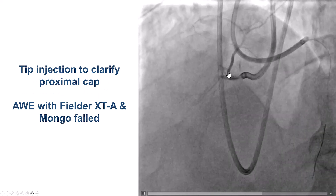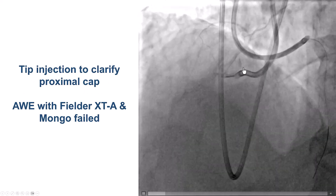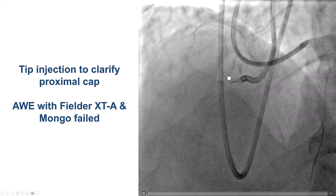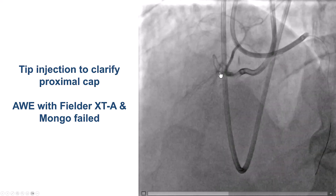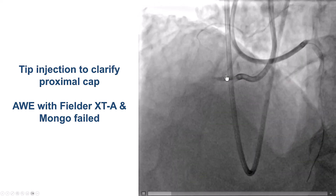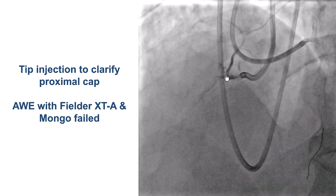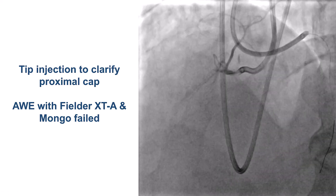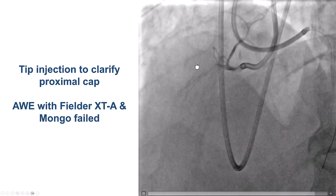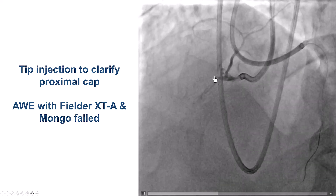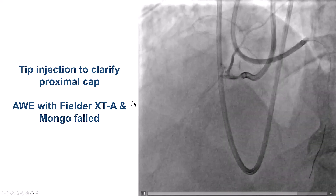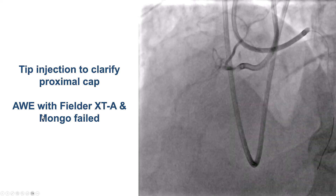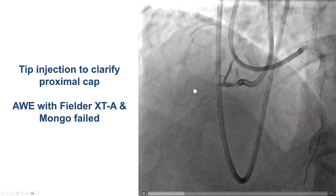We had difficulty understanding the proximal cap, in part because there was dampening of the guide. In cases like this, we can get a better sense of the anatomy by inserting a microcatheter and performing a tip injection. With the tip injection, we could see small branches coming off at the proximal cap, but there may be a tapered entry into the occlusion. We tried polymer-jacketed wires — a Fielder XTA and a Gladius Mongo — but could not get through.